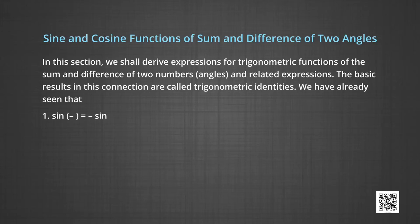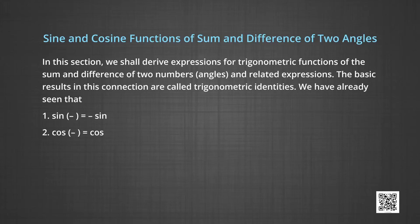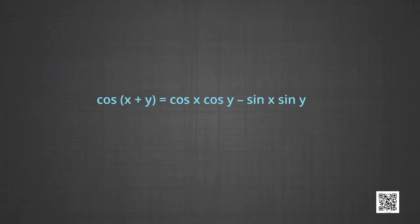In this section, we shall derive expressions for trigonometric functions of the sum and difference of two numbers, angles and related expressions. The basic results in this connection are called trigonometric identities. We have already seen that sin(-x) = -sin x and cos(-x) = cos x. We shall now prove some more results. First: cos(x+y) = cos x cos y - sin x sin y.